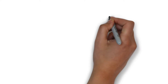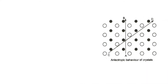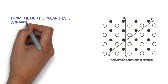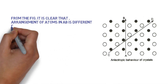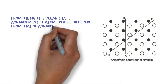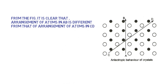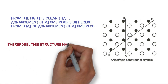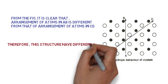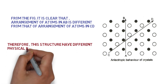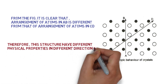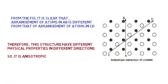Here is the anisotropic behavior of crystals. From the figure it is clear that the arrangement of atoms in direction AB is different from that of the arrangement of particles in another direction. Therefore this structure has different physical properties in different directions, confirming it is anisotropic.